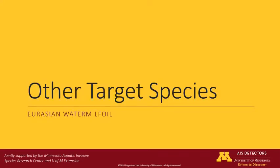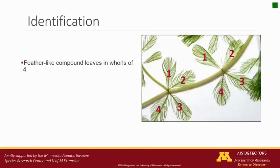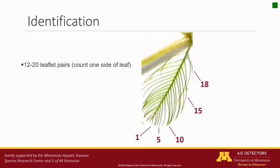While you are monitoring for starry stonewort as part of Starry Trek, you may encounter other potential aquatic invasive species, also known as AIS. The following slides will teach you how to identify three target AIS. The first is Eurasian water milfoil. Feathery looking leaves occur in whorls of four. Probably the single most important characteristic to look for are the number of leaflet pairs. Eurasian water milfoil will typically have 12 to 20 leaflet pairs per compound leaf.